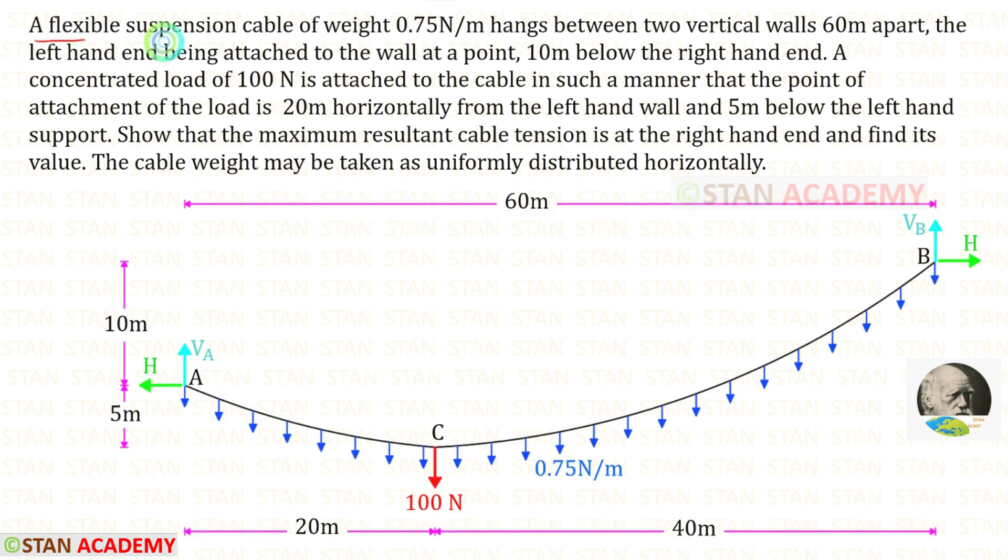A flexible suspension cable of weight 0.75 Newton per meter hangs between two vertical walls 60 meters apart. The left hand end is attached to the wall at a point 10 meters below the right hand end.